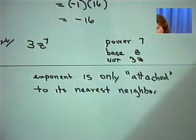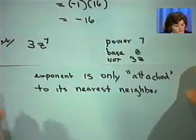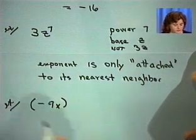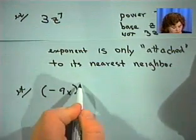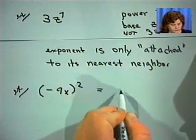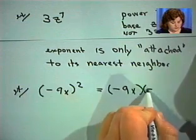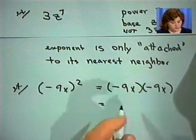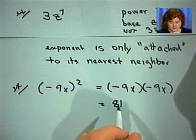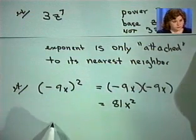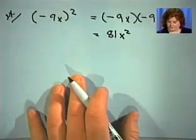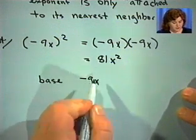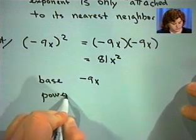So let's take a look at an example like that. Suppose you have negative 9x and the entire negative 9x is in parentheses, and we raise that to the power 2. What does that mean? That means we've got negative 9x times negative 9x. A negative times a negative gives us a positive. 9 times 9 is 81, so we'll have 81, and x times x is x squared. In our original statement, the base is negative 9x, everything inside those parentheses, and the power is 2.